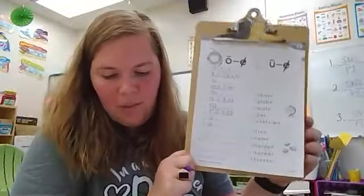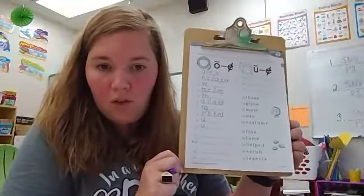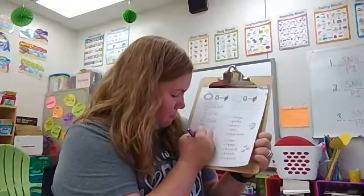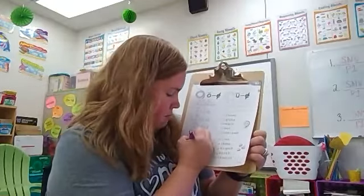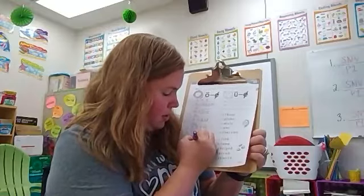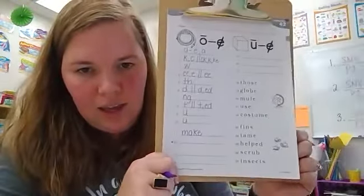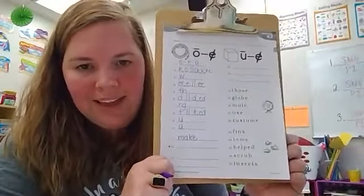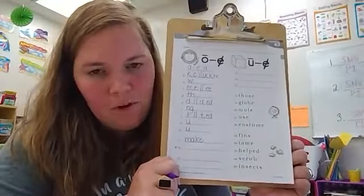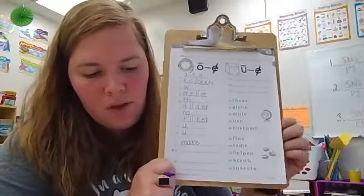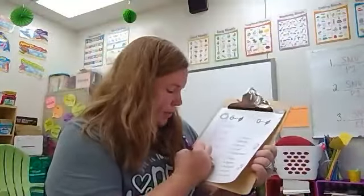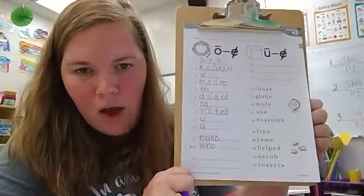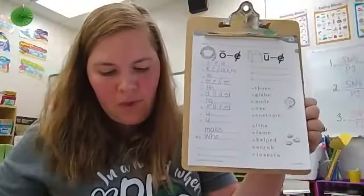Now let's practice some spelling words. Number 11, we're going to spell the word make. I hear the long A. That is an A consonant E word. M-A-K-E. Make. Number 12 is who. This is a sight word. W-H-O. Who.